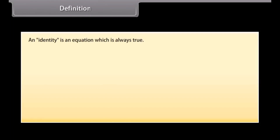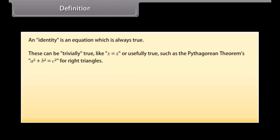Definition: An identity is an equation which is always true. These can be trivially true, like X is equal to X, or usefully true, such as the Pythagorean theorem: A squared plus B squared is equal to C squared, for right triangles.